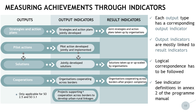If we stay with the same example, the result indicator is joint strategies and action plans taken up by organizations. This logical correspondence is to be followed. I would like to highlight one element which is a bit different: the pilot actions. The pilot actions, in terms of output, lead to the output indicator of pilot actions developed and jointly implemented. However, as explained before, solutions should derive from the pilot actions. Therefore, there is no direct result indicator related to the pilot action. Instead, the pilot action feeds into the jointly developed solution, which is again an output and an output indicator, covered by the result indicator of solutions taken up or upscaled by organizations.